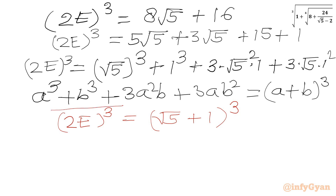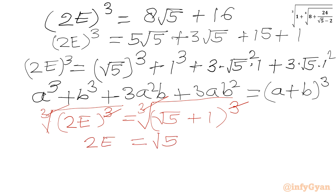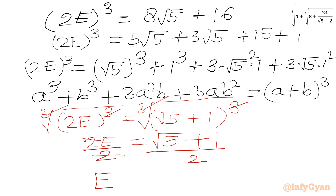Now I will take the cube root of both sides. Cube and cube root cancel from both sides for real values of e, so I can write 2e equal to square root 5 plus 1. Dividing both sides by 2, we get our answer: the expression value e equals root 5 plus 1 over 2.